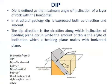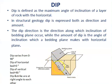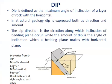Another term is dip. Dip is the inclination of a rock bed — the rock bed is tilted, expressed by the word dip. Dip is defined as the maximum angle of inclination of a layer of rock with the horizontal plane. In structural geology, dip is expressed both as direction and amount. Dip direction is the direction along which inclination of the bedding plane occurs, while the amount of dip is the angle of inclination which a bedding plane makes with the horizontal plane. As seen in the diagram, the bedding plane is represented by grey and orange colors, and the line of strike is formed by the intersection of the horizontal plane and bedding plane. The dip angle is the angle between the horizontal plane and the bedding plane. Dip varies from 0 to 90 degrees — a horizontal bed has a dip of 0 degrees while a vertical bed has a dip of 90 degrees. Dip and strike are at right angles to each other.